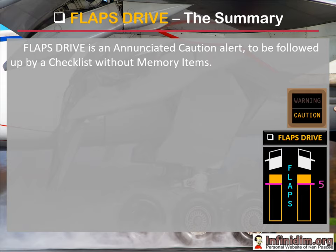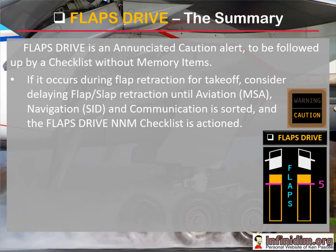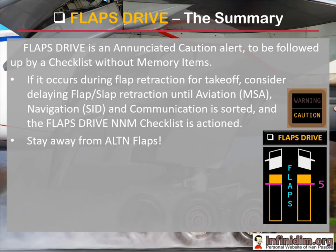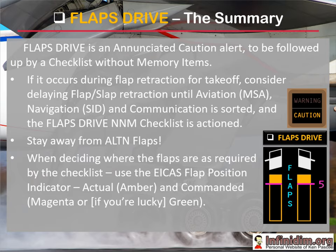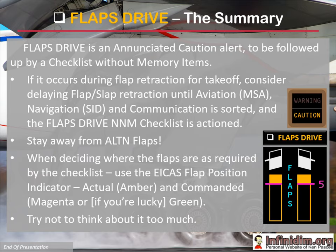Just to summarize on the flaps drive non-normal. For the scenario where it occurs on takeoff during flap retraction, typically the better response is to delay flap retraction altogether, assuming you can, until you're clear of terrain, navigation and comms are sorted out, and you're ready to run the non-normal checklist. The checklist is pretty clear to stay away from alternate flaps, because you could exacerbate the asymmetry that the flaps drive malfunction stopped. It can be pretty easy to overthink the question of where the flaps are — look at the indication, work out where the flaps are, and make a conservative choice. As a final piece of advice: slow down, enjoy the non-normal. If this happens to you in the aircraft, it's probably the only time you're ever going to see it. You may as well get it right.